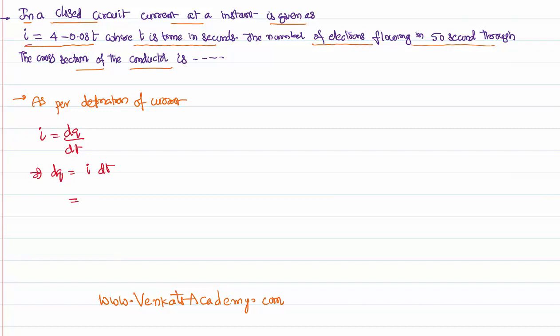For that, it is given in the problem i is a variable of time. So in the place of i, I can write 4 - 0.08t dt.